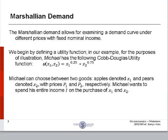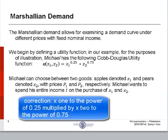Marshallian demand allows for examining a demand curve under different prices with fixed nominal income. We begin by defining a utility function. In our example, for the purposes of illustration, Michael has the following Cobb-Douglas utility function: utility is a function of x1 and x2, goods 1 and goods 2, equals x1 to the power of 0.25 and x2 to the power of 0.75.